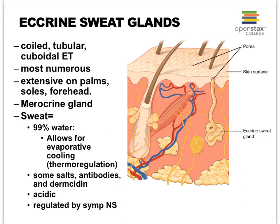Let's start with the most common sweat gland called the eccrine sweat gland. Notice it's spelled with two c's, and it's a very coily type of gland which then sends its tube out towards the surface of the skin to create a sweat pore. These are the most numerous sweat glands, very abundant on the insides of your hands, the palms of your hands, the soles of your feet, and your forehead.